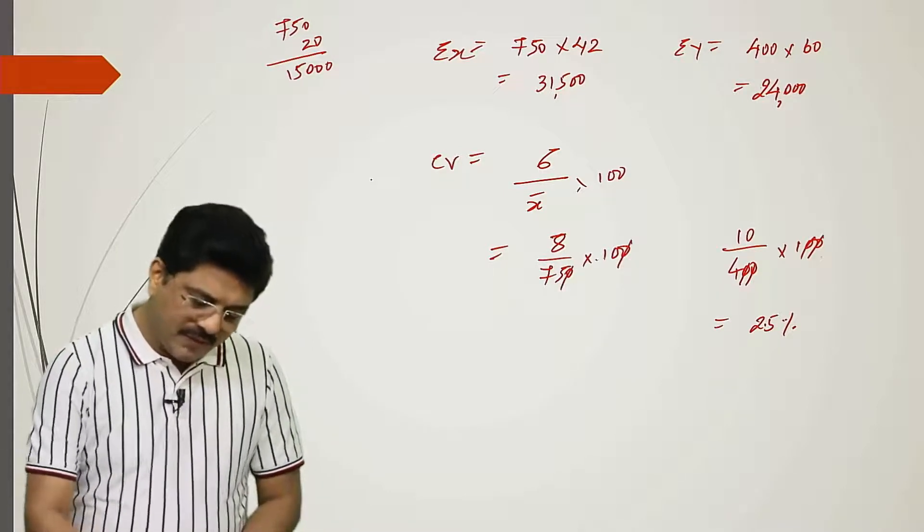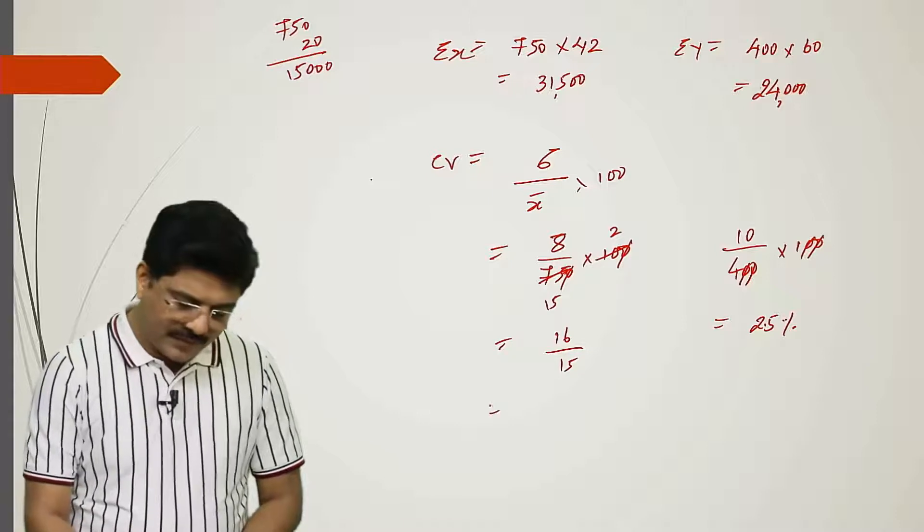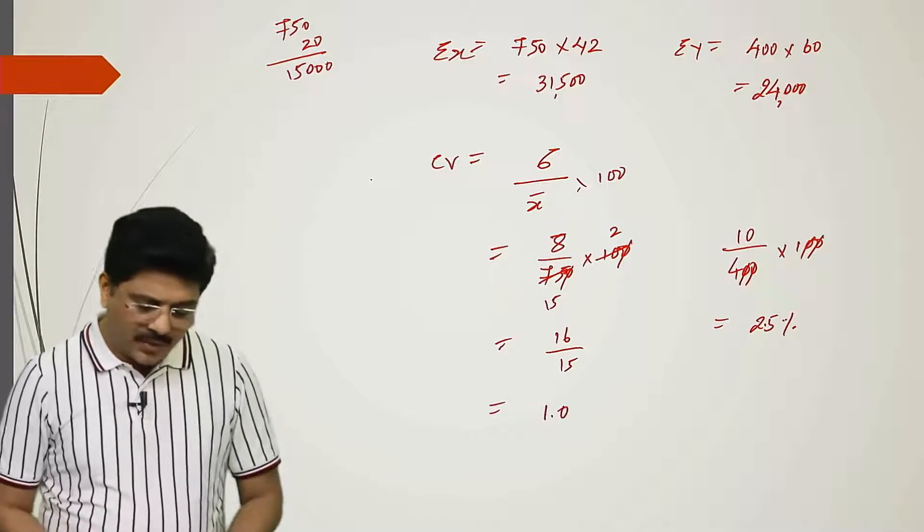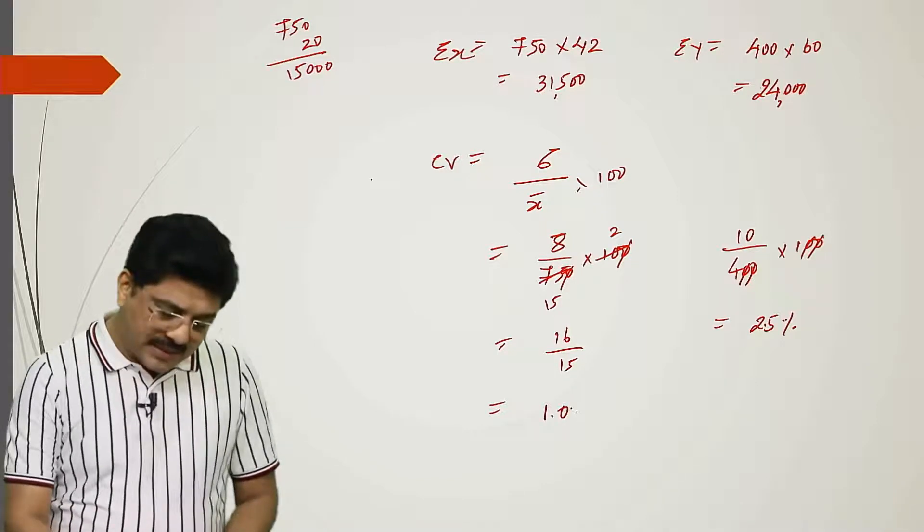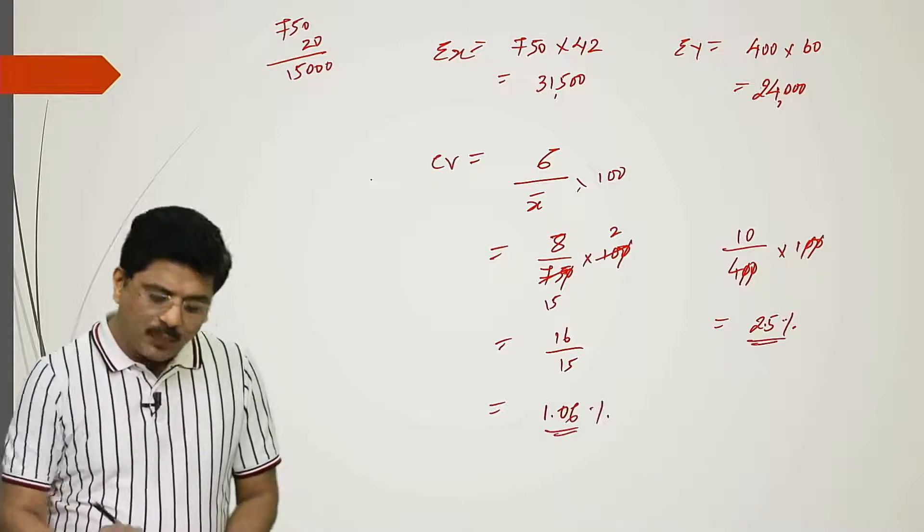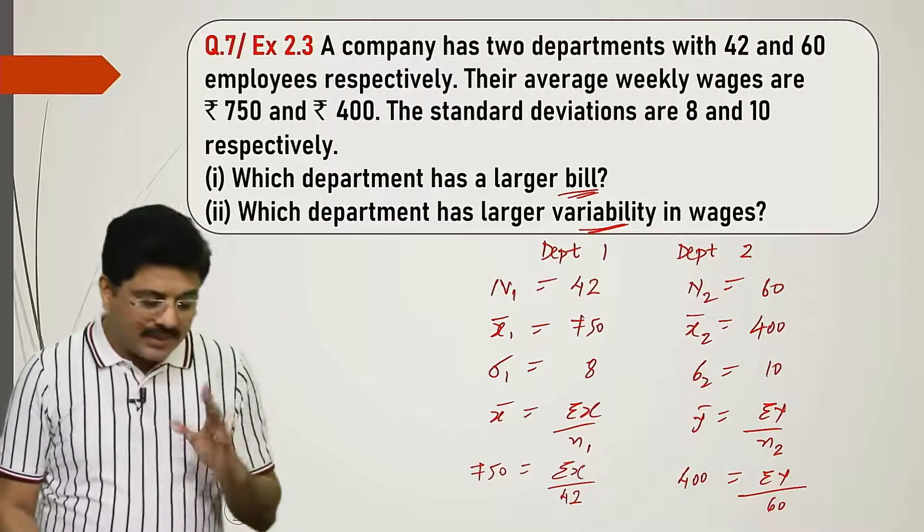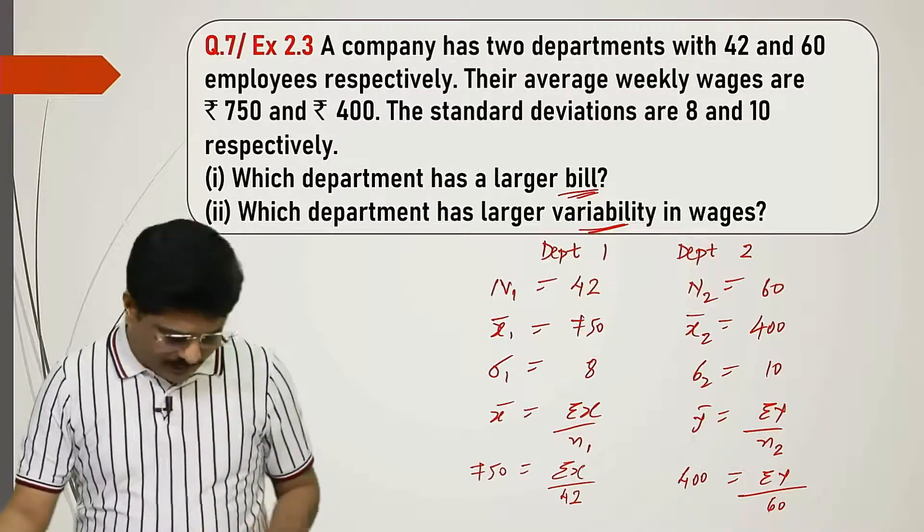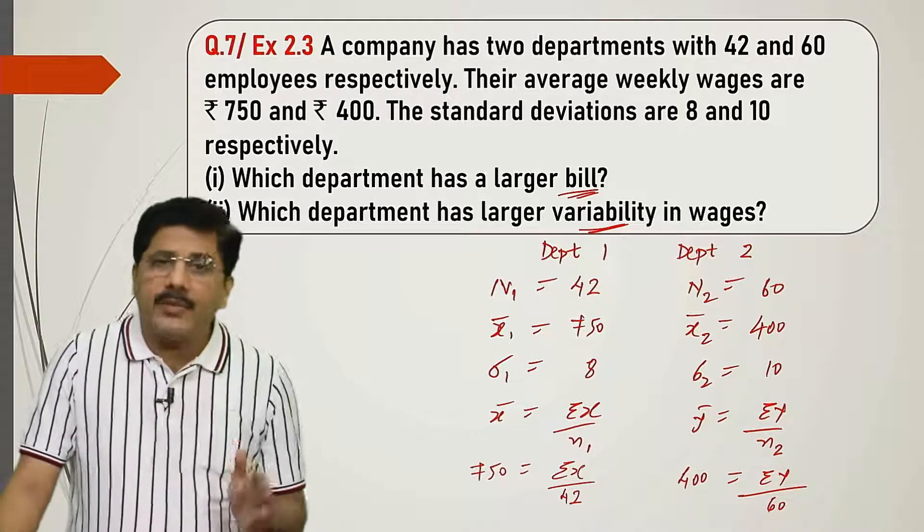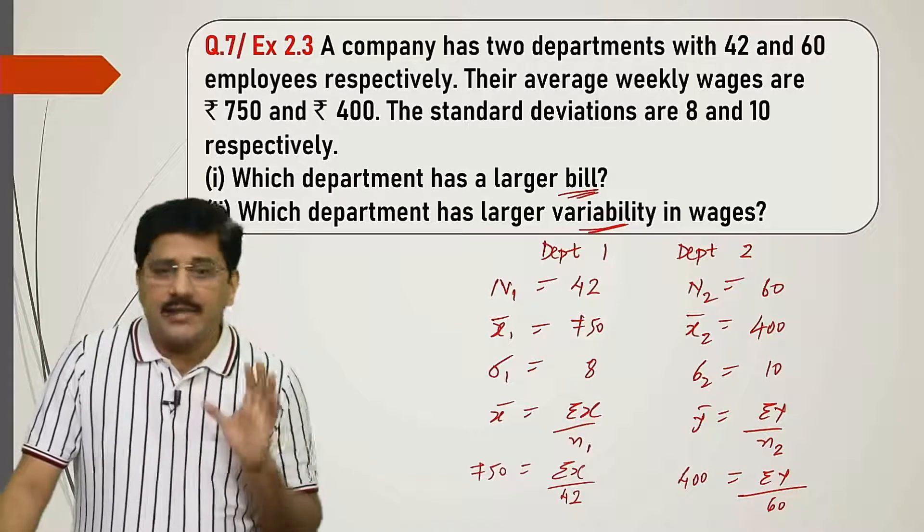Two zeros cancel, 10 upon 4 which is 2.5 percent. Here, one zero cancels, 5 twos and 5 fifteens. So 16 upon 15: 15 ones are 15, 1 remains, 15 sixes are 90, so 1.06 percent. One has 1.06, the other has 2.5. Larger is more variable. The question asks which department has larger variability? So answer: department 2 has a higher CV as compared to department 1. Therefore, department 2 wages has larger variability.